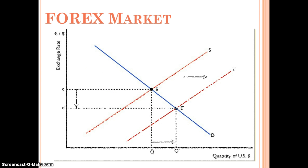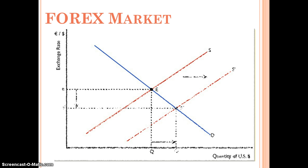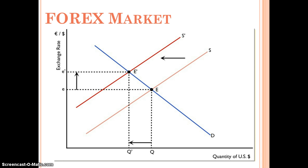The same applies to supply. If people holding U.S. dollars want to shift into a different currency, they increase the supply of dollars in the market, causing a decrease in the exchange rate. Conversely, if people are unwilling to give up their dollars and supply fewer in the foreign exchange market, we would see an increase in the exchange rate and a decrease in the quantity supplied.